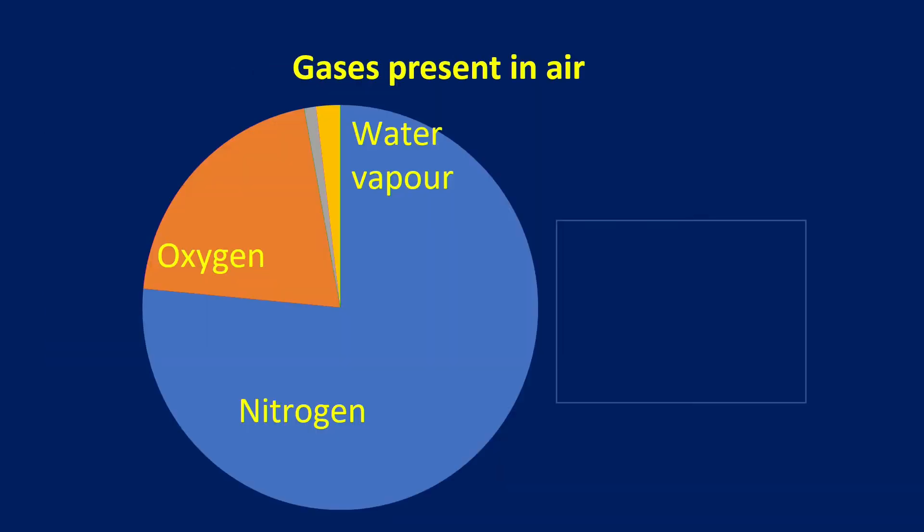There are several gases present in the atmosphere. Out of them, nitrogen is highest on the surface of the earth — it is almost 78.9 percent. Next is oxygen — it is almost 20.8 percent — followed by water vapour, carbon dioxide, and argon, neon, krypton, and other gases.